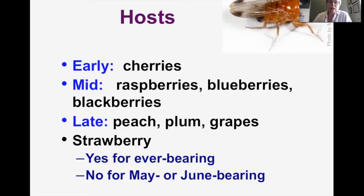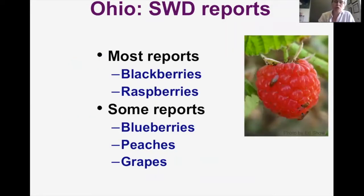The hosts basically progress through different crops as different fruit begin to ripen and get sweet and soft. Early on, it's in cherries. In mid-season, it gets in raspberries, blueberries, and blackberries. Later on, it gets in peaches, plums, and grapes. For strawberry, it does get in ever-bearing strawberries later in the summer, but so far it is not getting into typical May or June bearing strawberries. In Ohio, the most severe damage we hear about is on blackberries and raspberries, but we're also getting reports from blueberries, peaches, and grapes.